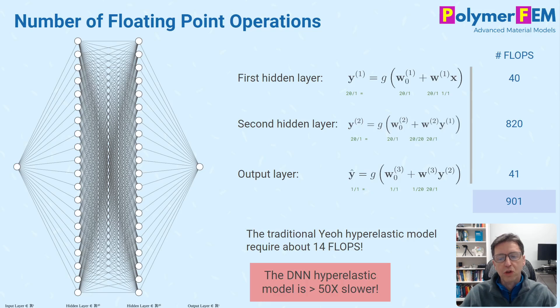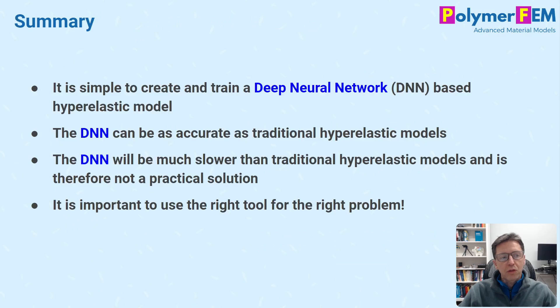To summarize: it is easy to create and train a deep neural network based on a hyperelastic material. You can do it—I showed you how for a 1D case—and it can be very accurate too. The problem is it will run much slower than traditional hyperelastic models because traditional hyperelastic models have such simple math. It doesn't really make sense to use this powerful neural network idea and try to apply it to this specific issue of a hyperelastic material model. It's not the right tool for this problem. It works but it will be very slow. If you have any questions you can ask them below.